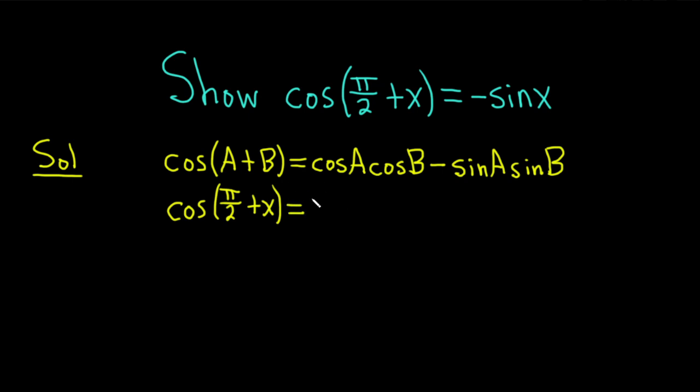So this is the cosine of A, so cosine of pi over 2 times the cosine of B, so the cosine of x and then minus sine of A, so that's sine of pi over 2 and then we have sine of B, so that's going to be the sine of x.